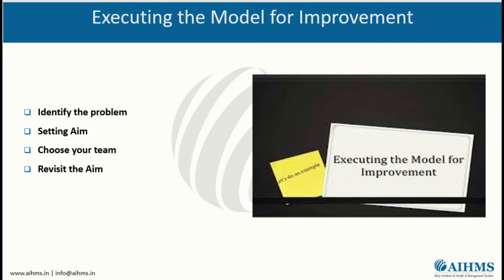Next we will discuss the executive model of improvement. First, we need to identify the problem — for example, in an emergency department of a hospital, a patient says he is in pain. Then we need to set an aim: we want to reduce the pain. Then we need to choose your team — for example, your doctor. Then revisit the aim: the aim is to reduce the pain of that patient.